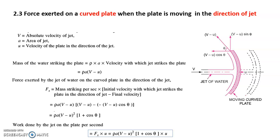In summary, the cases under the moving plate have a direct correlation with the stationary cases. The key difference is that the absolute velocity in every case of a moving plate or vane is substituted with the relative velocity (v minus u).